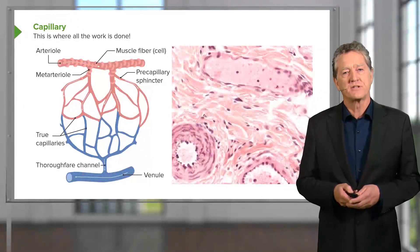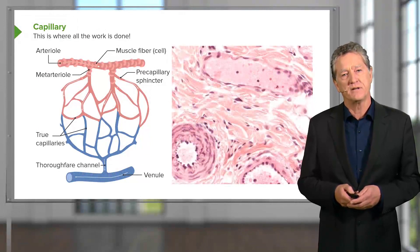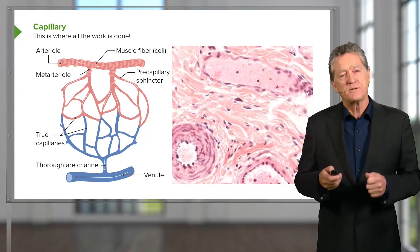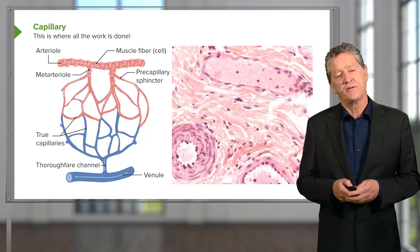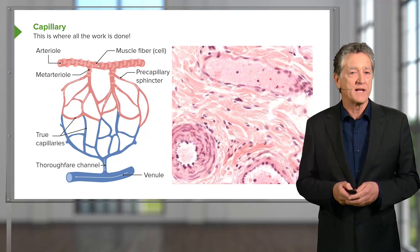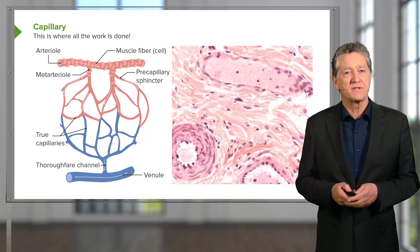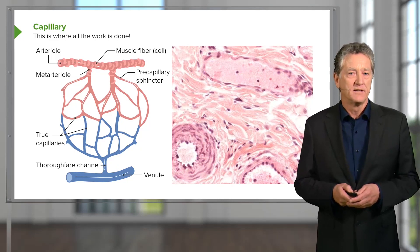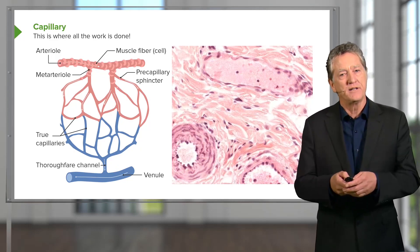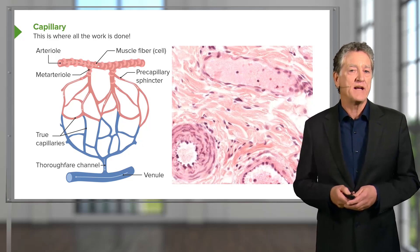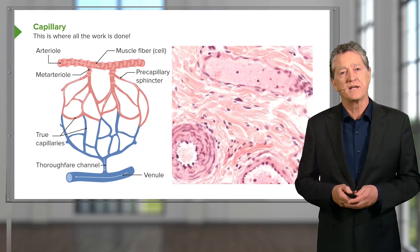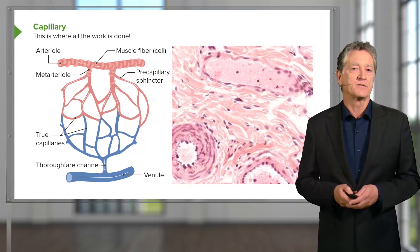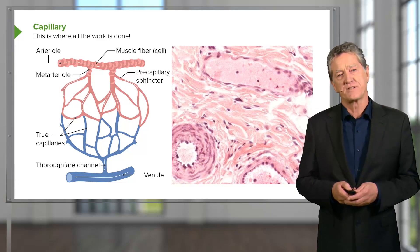Sometimes histologists like to describe meta-arterioles or pre-capillary sphincters. They can sometimes close off the supply of blood to the capillary bed from the arterioles. Or sometimes they can close off in one area and open up in another area and divert blood directly from the arterial side of the cardiovascular system directly back into a venule and bypass the capillary bed altogether. It's called an arteriovenous anastomosis, and that occurs in some parts of the body.